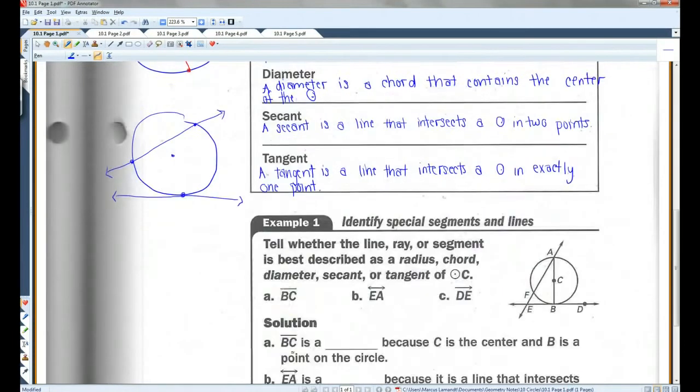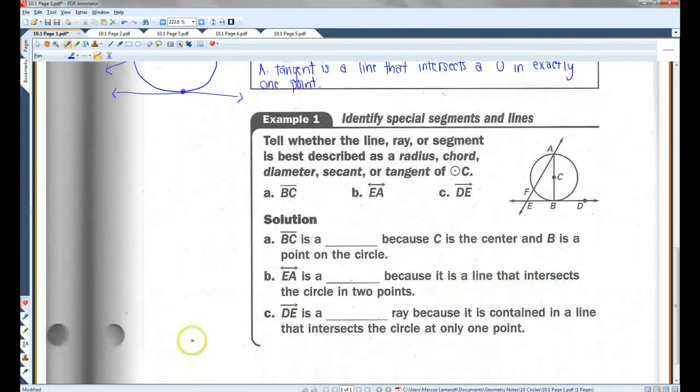Let's do an example. Identify special segments and lines. Tell whether the line, ray, or segment is best described as a radius, chord, diameter, secant, or tangent of circle C.